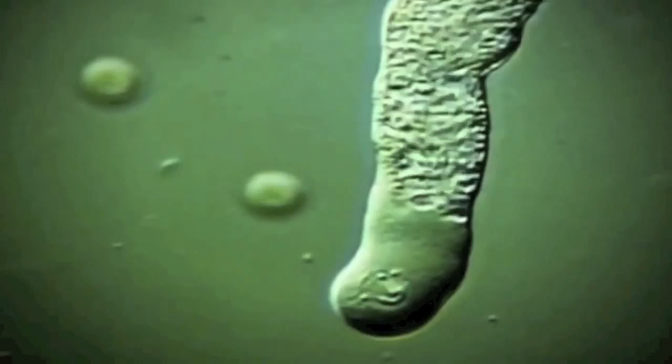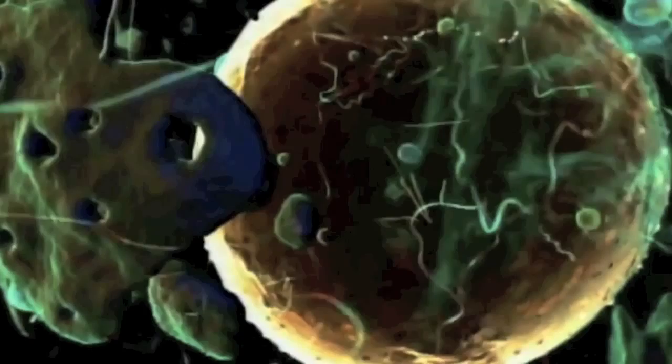The first evolutionist to take up the issue of the origin of life in the 20th century was the Russian biologist Alexander Oparin. His aim was to explain how the first living cell, the alleged common ancestor of all living beings according to the theory of evolution, could emerge.